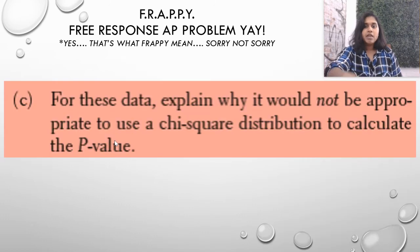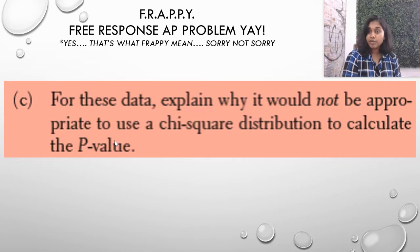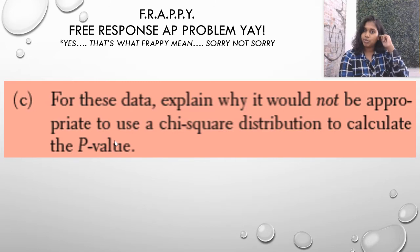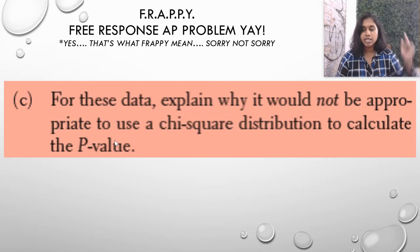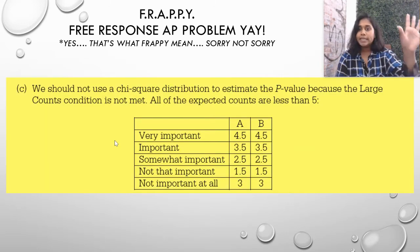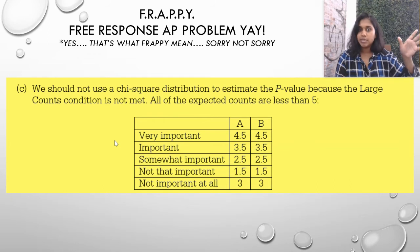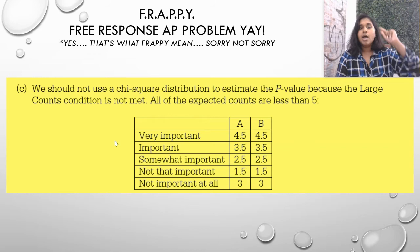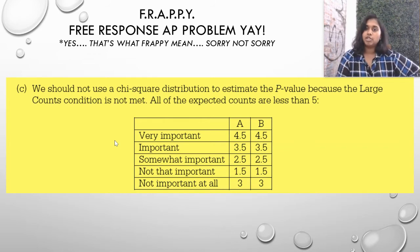Let's look at C. For these data, explain why it would not be appropriate to use a chi-square distribution to calculate the p-value. Some of you might pause and say, hold on, they did calculate the chi-square distribution. So why wouldn't it be appropriate? And that would be going back to that step number two, plan. When we plan, we don't just name the procedure, we test if conditions meet. So let's test our conditions. Random, we could meet. I think they were randomly assigned to each category. And the 10%, cool. But look what happens when we hit that large count's condition.